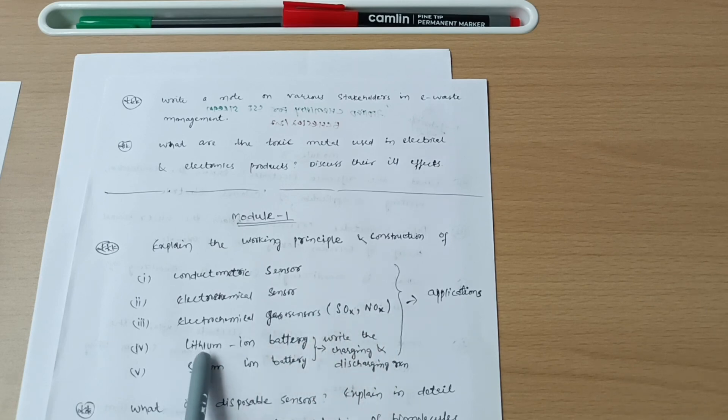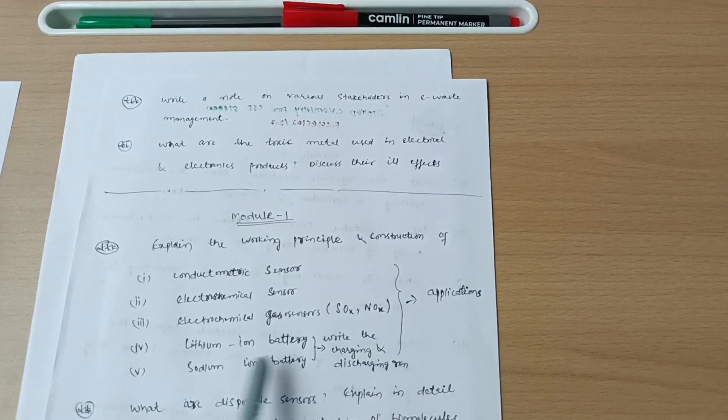Next is lithium ion battery and sodium ion battery and they will ask you the combination. Write down the working principle and construction of lithium ion battery, write the charging and discharging reactions. Same for the sodium ion battery, write the charging and discharging reactions.